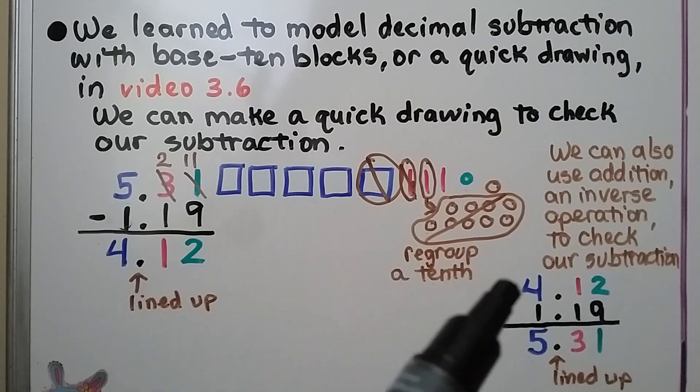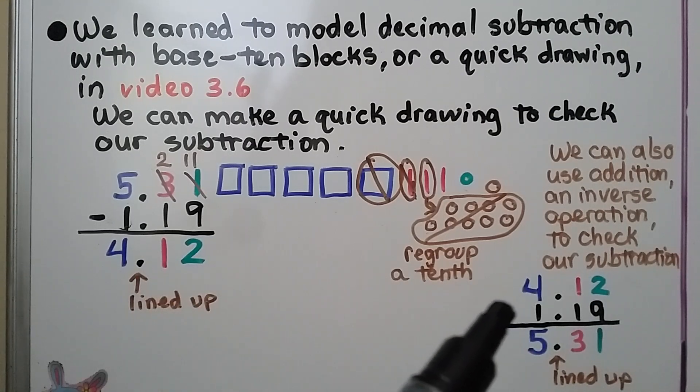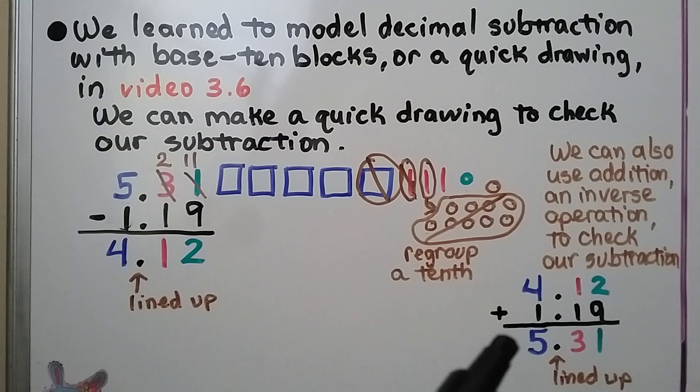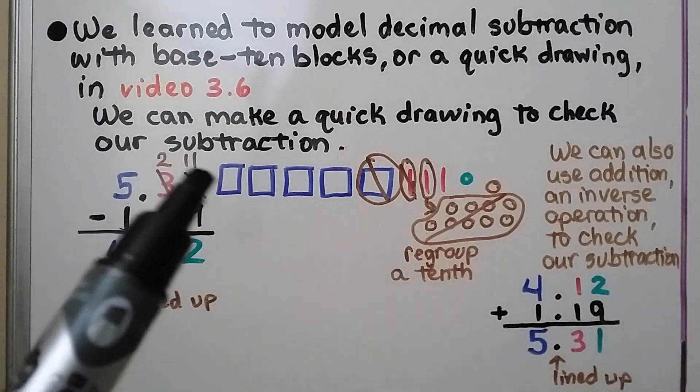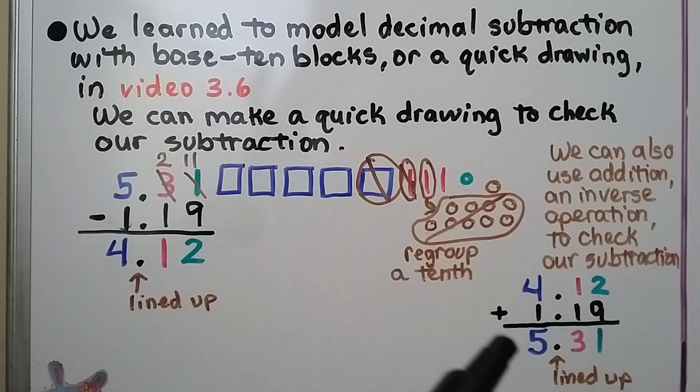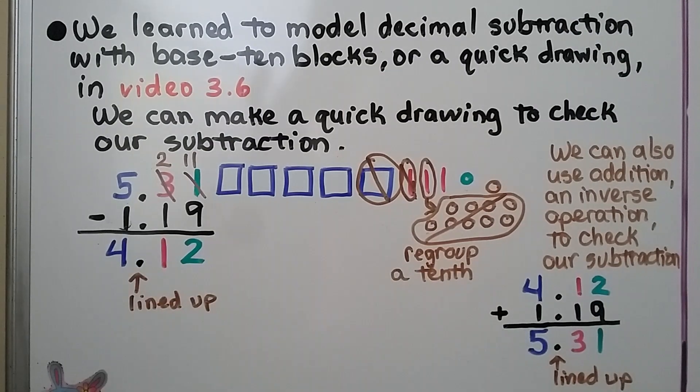What we do is we take our difference, 4 and 12 hundredths, we add the subtrahend, and if we get the minuend, we know we did it correctly.